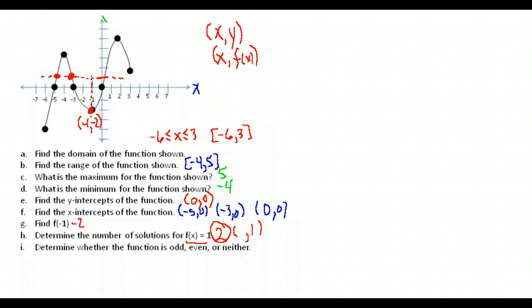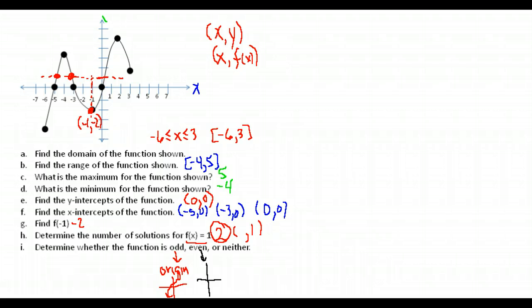Finally, determine whether the function is odd, even, or neither. Odd and even describe symmetry. An odd function is symmetric with respect to the origin — one side goes up, the other goes down, centered at zero. An even function is symmetric over the y-axis. This function has no symmetry — there's nowhere you could fold the graph and have matching pieces — so this one is neither.